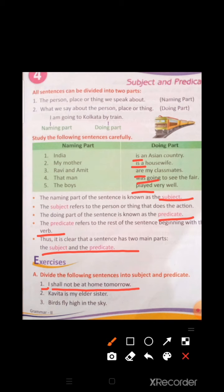Number 2: 'Kavita is my elder sister.' Here, 'Kavita' is the subject, and 'is my elder sister' is the predicate. Number 3: 'Birds fly high in the sky.' Here, 'birds' is the subject, and 'fly high in the sky' is the predicate.